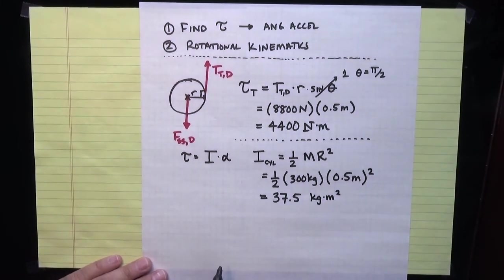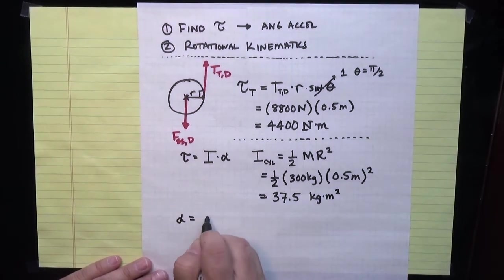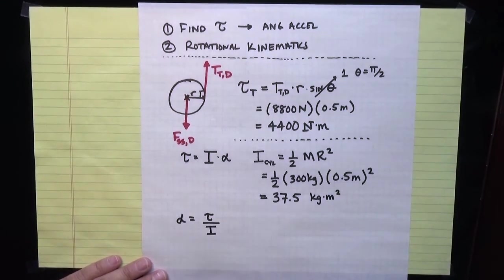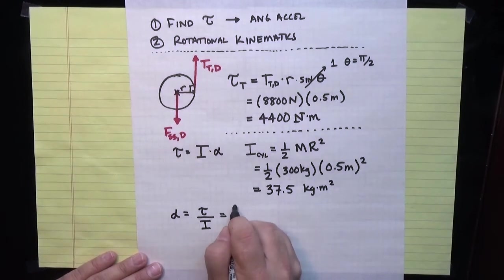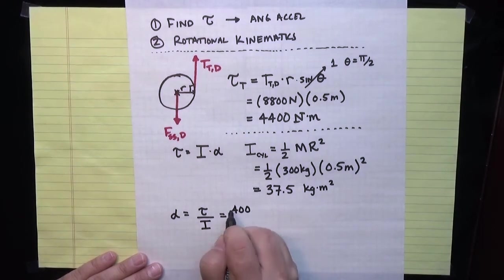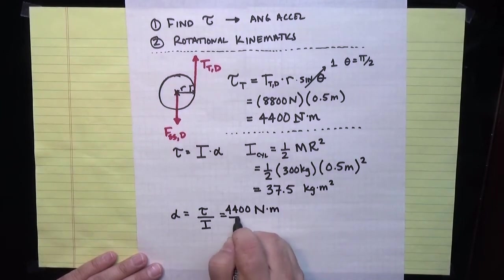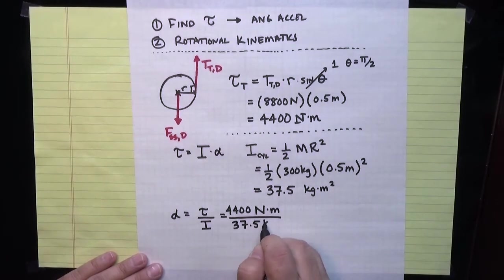If I now go back to the relationship between torque and angular acceleration, that tells me that angular acceleration is equal to torque divided by the moment of inertia. I know what both of those things are. The torque, as we computed above, it's 4,400 newton meters divided by the moment of inertia, which is 37.5 kilogram meters squared.